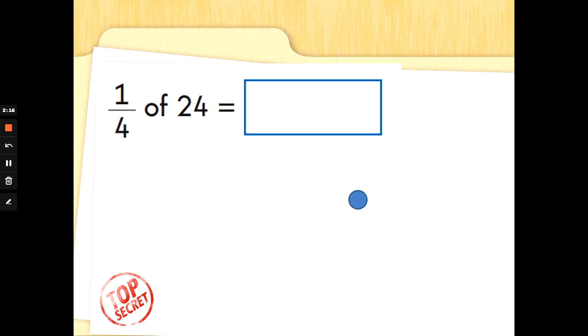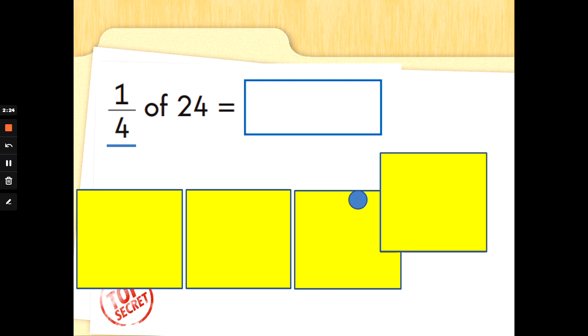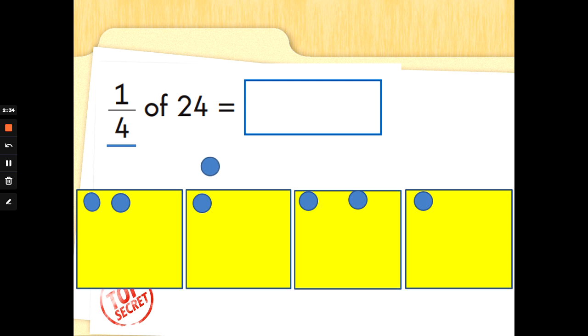This time we're going to find 1/4 of 24. So we're finding quarters. We need to split these into 4 boxes. So we need to draw 4 boxes. And then we need to get sharing 24: 1, 2, 3, 4, 5, 6, 7, 8, 9, 10, 11, 12, 13. Did you see Mrs. Gillette realised it wasn't equal?